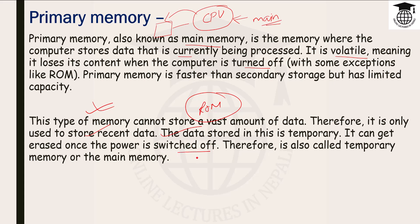The data is volatile — it gets erased once the power is switched off, with the only exception being ROM. Therefore, primary memory is also called temporary memory, volatile memory, or main memory. Primary memory has different types, and in the case of RAM, there are further subtypes.